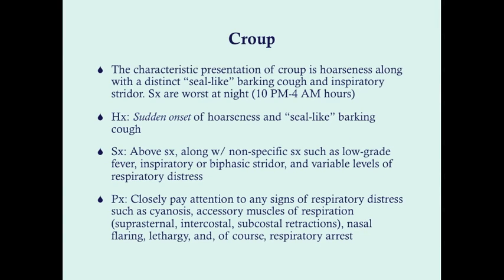The characteristic presentation of croup is hoarseness — like we saw with laryngitis — but it also has something we don't see in laryngitis: because the trachea is affected, it causes a very distinct seal-like barking cough and an inspiratory stridor. Two things that really differentiate this from laryngitis are that seal-like barking cough and the inspiratory stridor. The history is a sudden onset of symptoms, which also varies from laryngitis, where hoarseness came on after a viral prodrome.